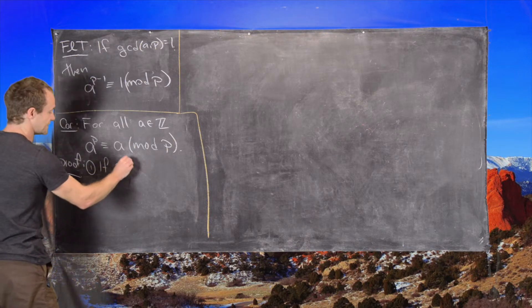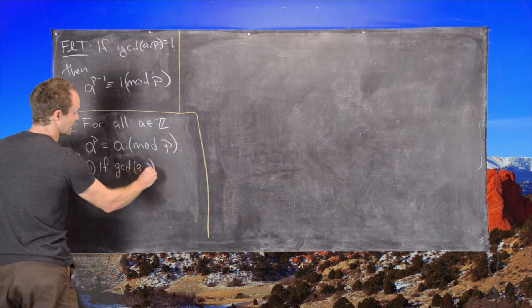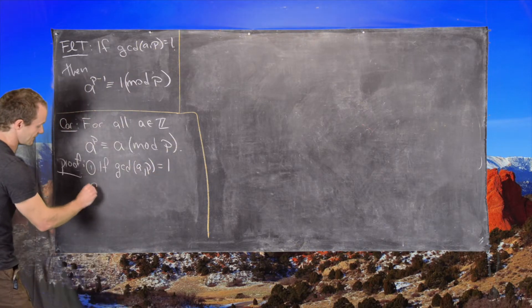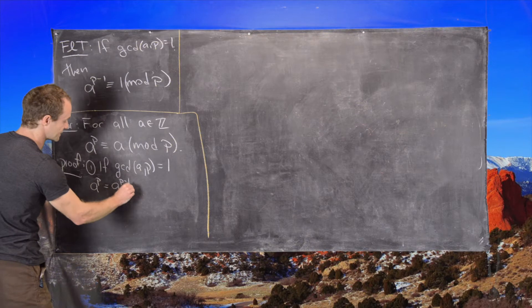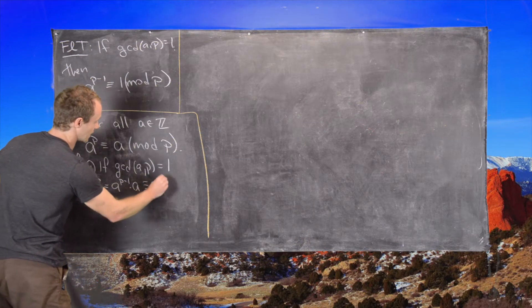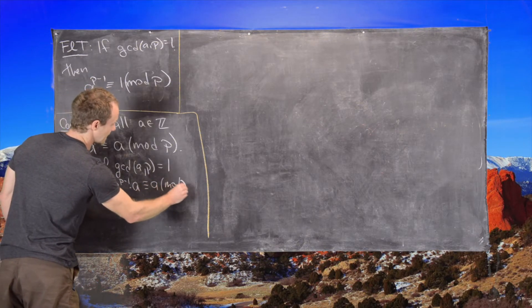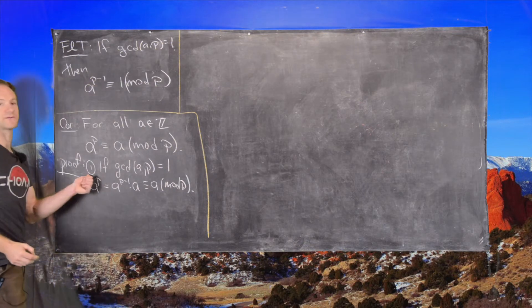One, if the GCD of A and P equals 1, then that means A to the P is equal to A to the P minus 1 times A, which is congruent to A mod P. And here we used Fermat's little theorem.